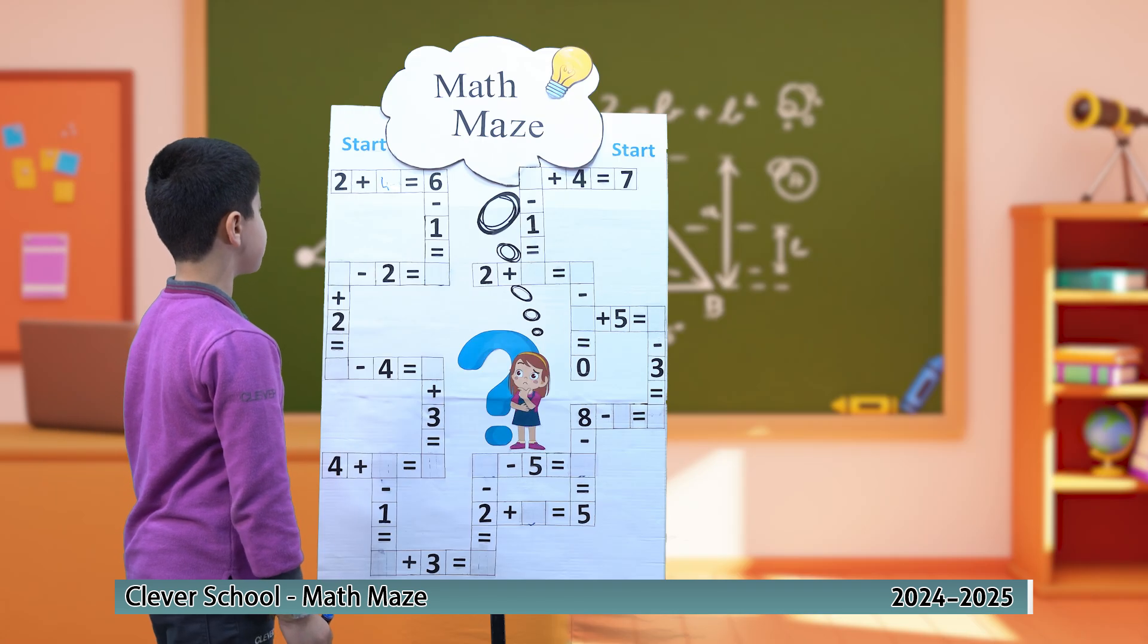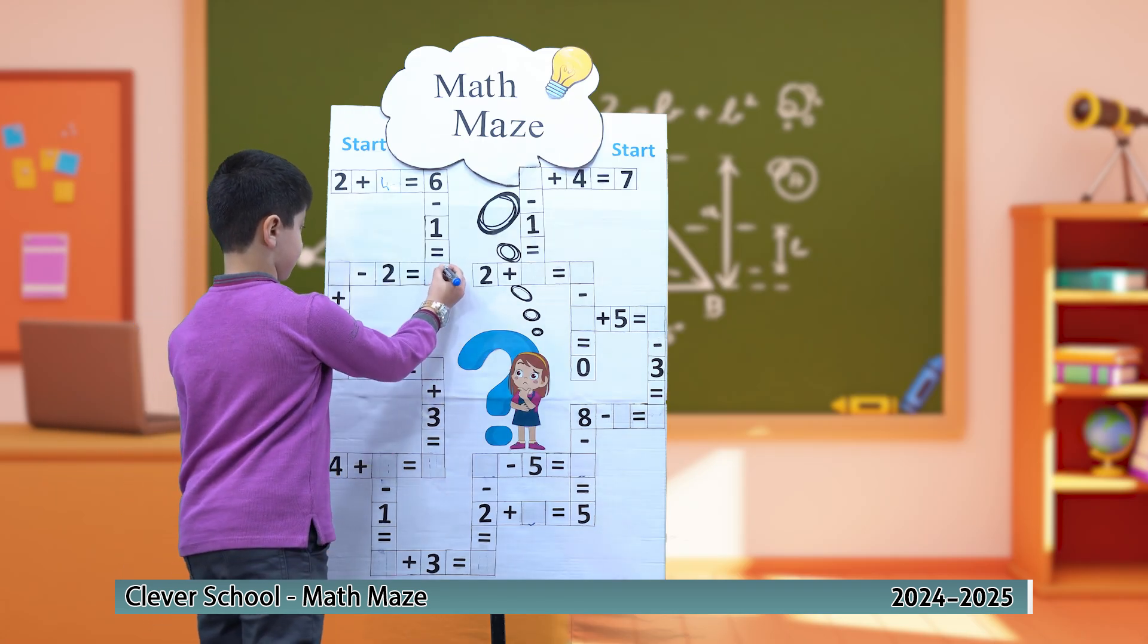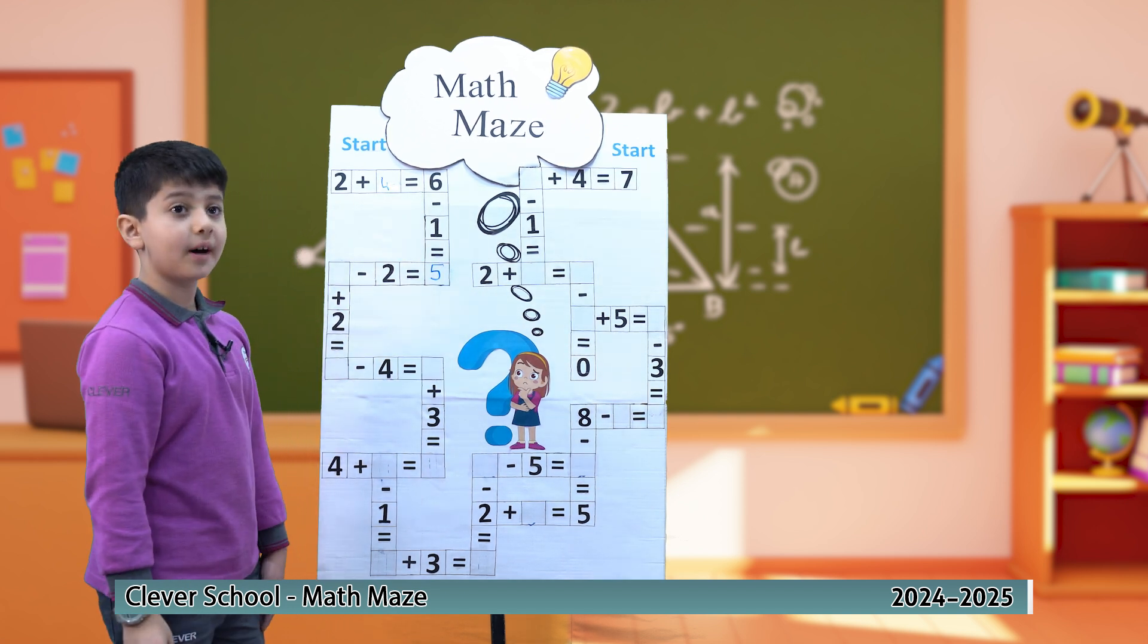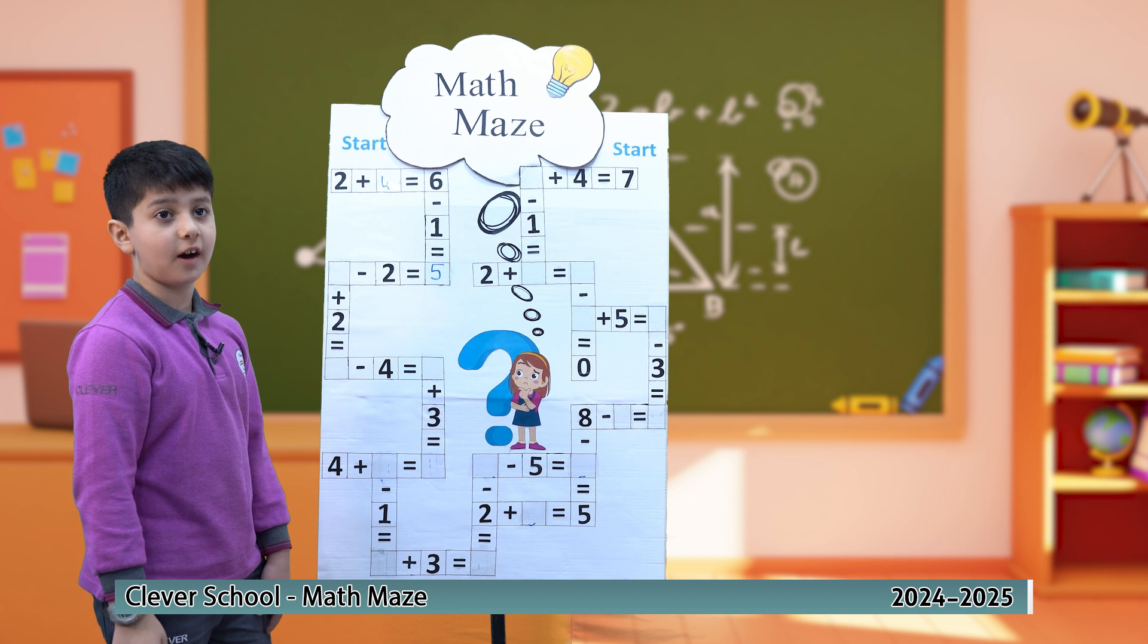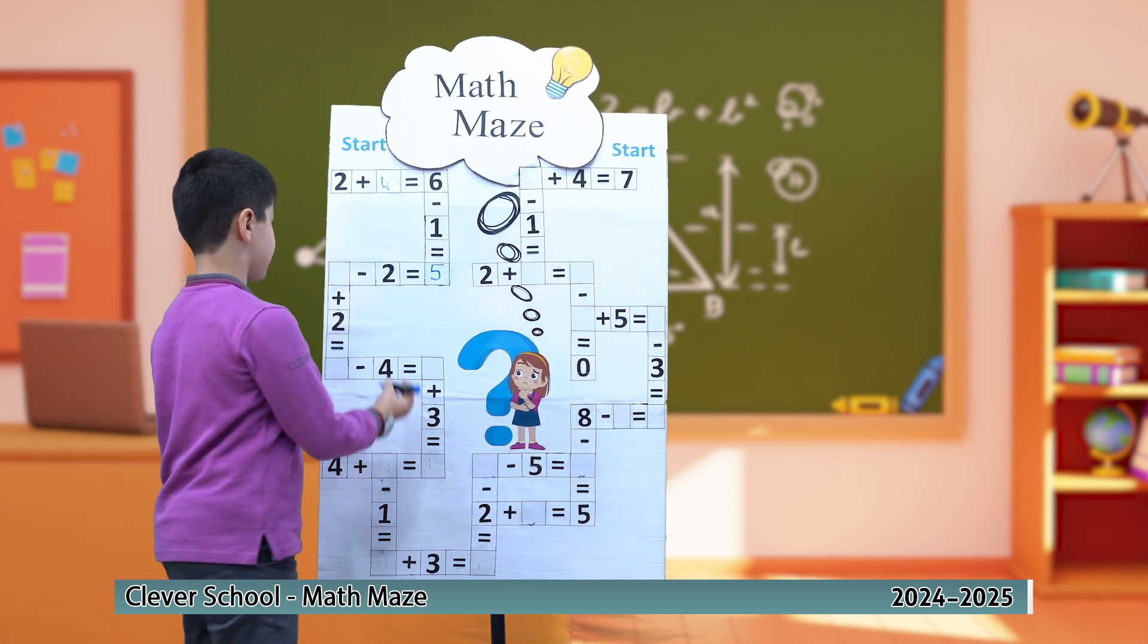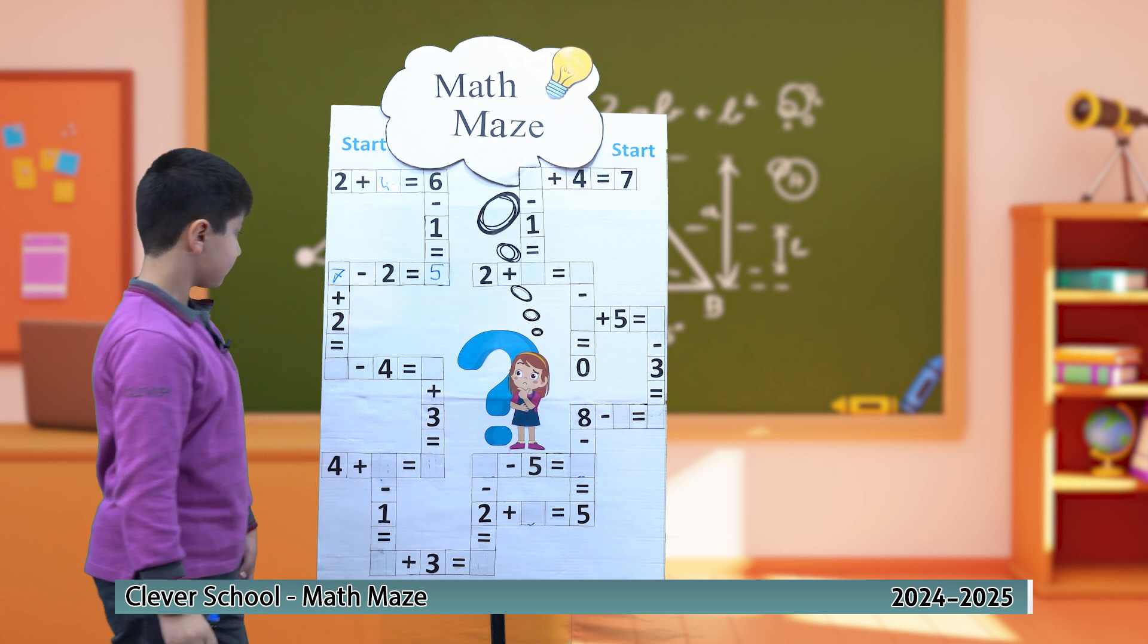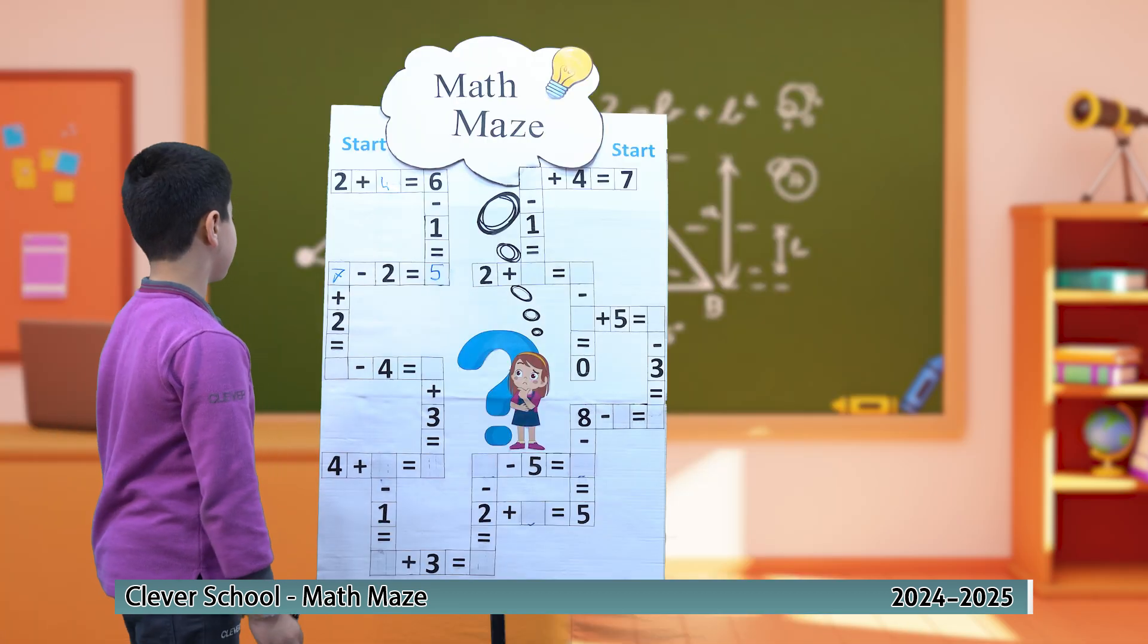6 minus 1 equals 5. Which number minus 2 equals 5? 7. 7 plus 2 equals 9.